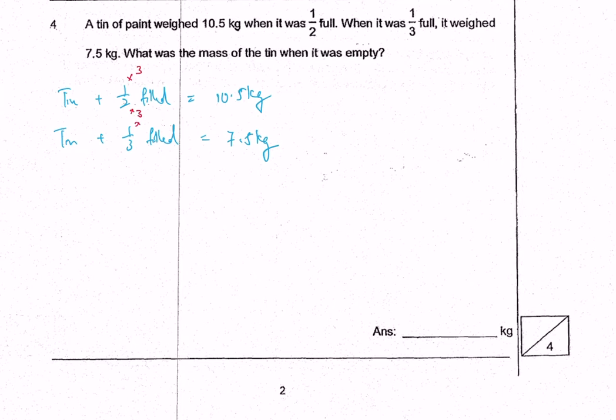So I want to make the denominator 6. And you realize that when a tin is 3 over 6 filled, it's 10.5 kg. And when a tin is 2 over 6 filled, it is 7.5 kg.